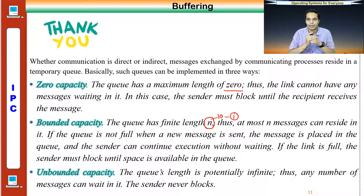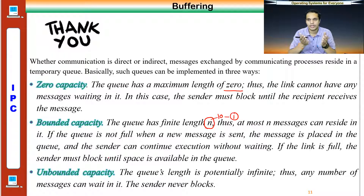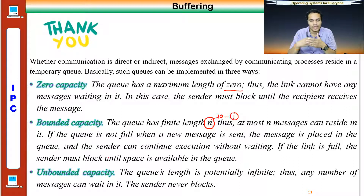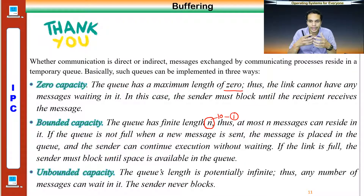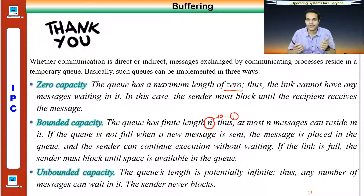So this is regarding inter-process communication and these are the two methods of implementing it. The first method is the shared memory model, which is best suited for processes that reside on the same system. The second method is the message passing system, which is very advantageous when implementing communication between processes that reside on different systems. Hopefully you enjoyed the video — thank you all for watching, take care.